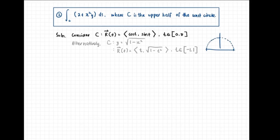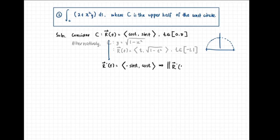We'll use the polar coordinates parametrization. Given r of t equals (cosine t, sine t), r prime of t equals (negative sine t, cosine t). The norm of r prime is equal to the square root of sine squared t plus cosine squared t, which equals the square root of 1, so the norm is 1.